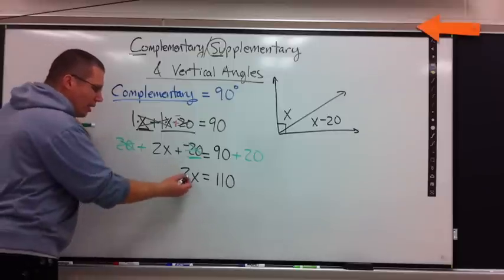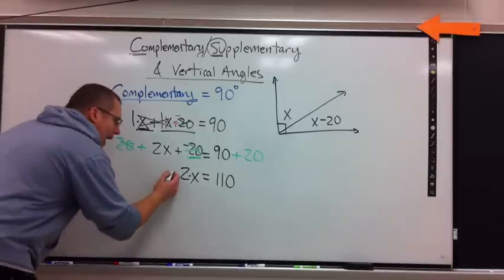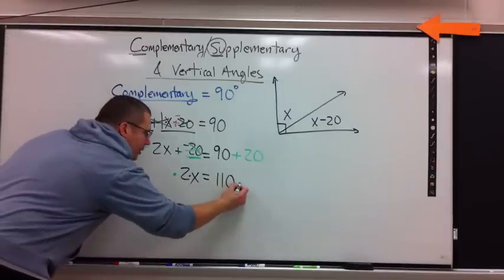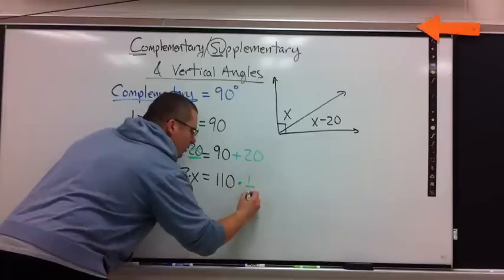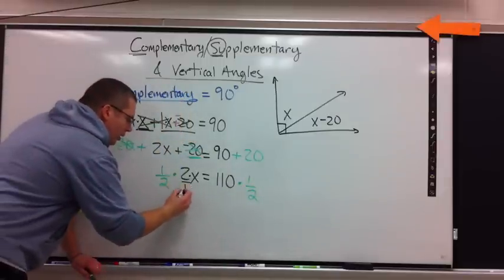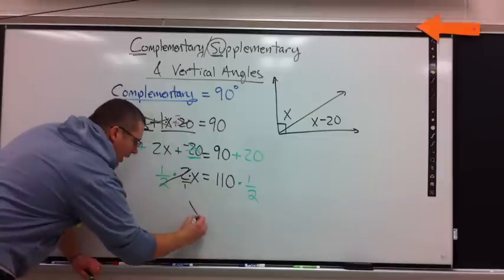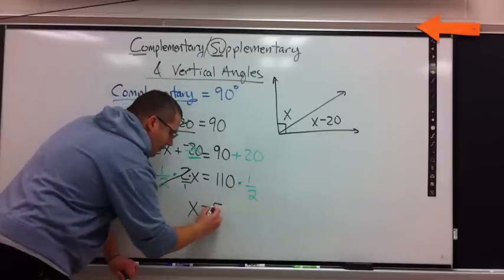I'm ready to get rid of a multiplied 2. How do I get rid of a multiplied 2? No, I don't add the opposite. I multiply. By what? The reciprocal. 1 over 2. 1 over 2. The 2's cancel out. I'm left with X. 1 half times 110, 55.